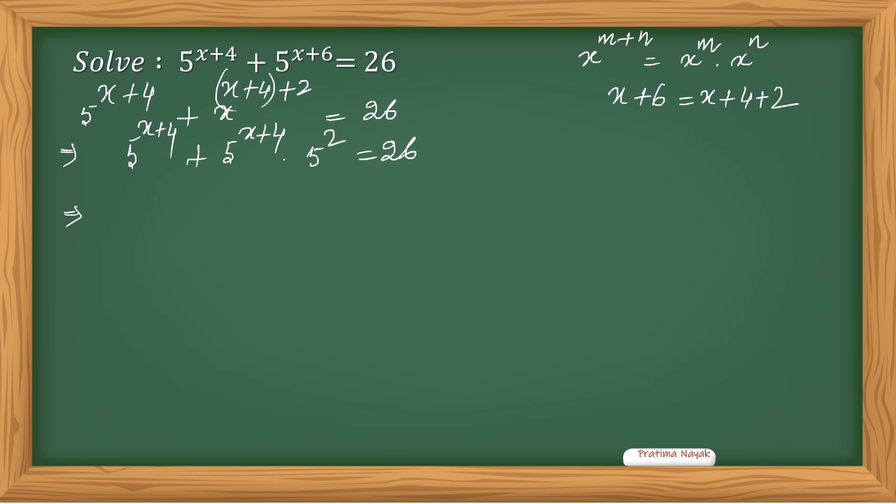I take 5 raised to the power x plus 4 common from both terms. So the first term leaves 1, the second term leaves 5 squared, that is 25.